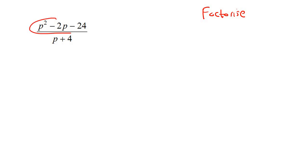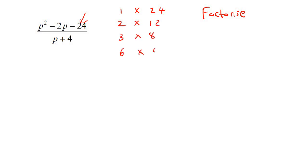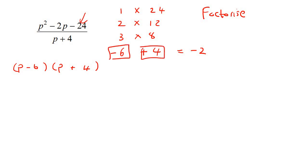What you're going to do is try to factorize the top and factorize the bottom. The top is a trinomial. You look at 24 and think of factor pairs: 1×24, 2×12, 3×8, 6×4. You need to find which combination gives you negative 2. We choose 6×4 because negative 6 plus 4 is negative 2. So you make two brackets: (p − 6)(p + 4). The bottom stays as is. The (p + 4) factors cancel, and your final answer is p minus 6.